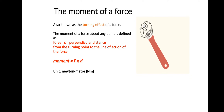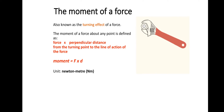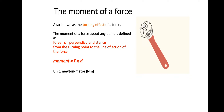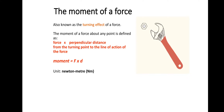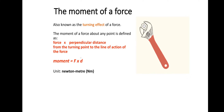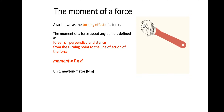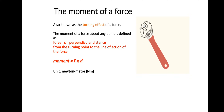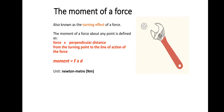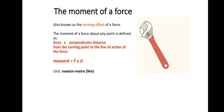So a moment is force times distance, therefore it's measured in Newton meters. It's not the same as work done. Work done is measured in joules, but the more simplified units are the Newton meter. In work done, the force and the distance are acting in the same direction, parallel to each other, whereas in a moment they are perpendicular to each other. So same unit, completely different meaning.